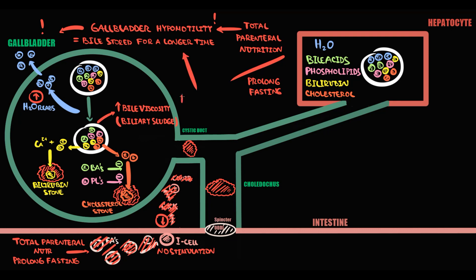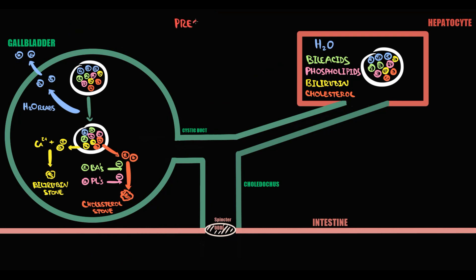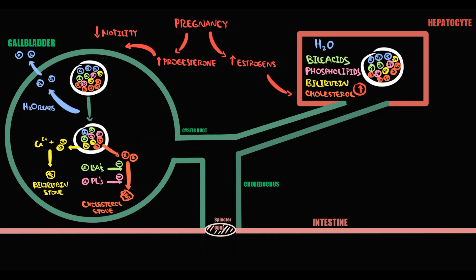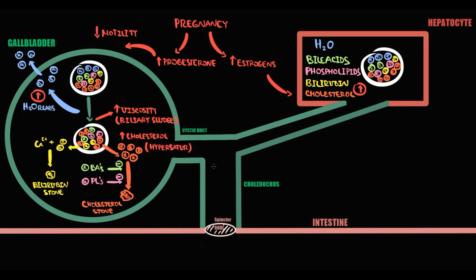Another factor that decreases the motility of the gallbladder is progesterone. During pregnancy, for example, we have a combination of risk factors. Increasing estrogens stimulate cholesterol secretion, so there will be more cholesterol molecules in the bile. Increasing progesterone decreases gallbladder motility, so more water will be reabsorbed, increasing the viscosity of the bile. Increasing viscosity creates biliary sludge, and the increasing amount of cholesterol causes hypersaturation of bile with cholesterol. Together, this greatly increases the risk of cholesterol gallstone formation, and such gallstones can easily cause an obturation in the biliary tract.